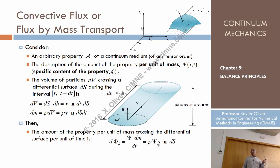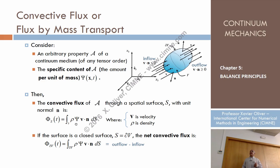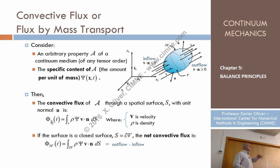The differential convective flux depends on density rho, velocity v, the normal n, the surface area, and phi — the specific content. To get the total convective flux across the whole surface, integrate: the flux equals the integral over S of rho·phi·v·n·dS. This provides the mathematical expression of the convective flux concept.